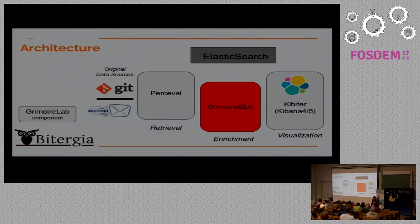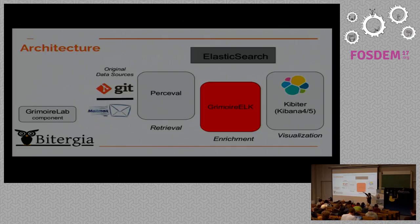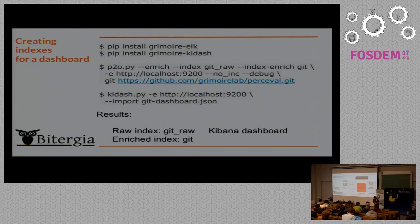The next component is GrimoireElk. GrimoireElk takes charge of storing information in Elasticsearch. It can also run Perceval to get information — remember that Perceval was producing Python dictionaries — GrimoireElk can run Perceval, get those dictionaries, and upload them as raw indexes to Elasticsearch. It then uses the same information to produce enriched indexes. That means GrimoireElk can essentially produce dashboards, because the enriched information stored there is what Kibana uses to visualize.